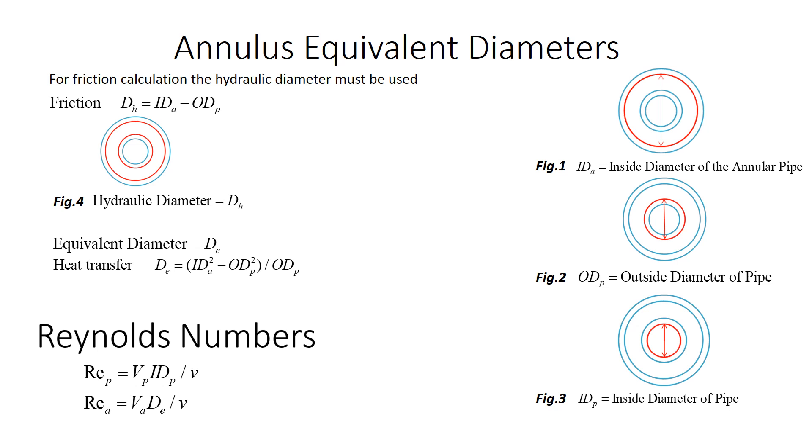For friction factor calculations, we must first find the hydraulic diameter, which is the inside diameter of the annular pipe minus the outside diameter of the inner pipe. For heat transfer calculations, the equivalent diameter must be used. The equivalent diameter equals the inside diameter of the annular pipe squared minus the outside diameter of the inner pipe squared divided by the outside diameter of the inner pipe.